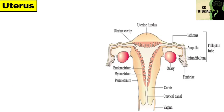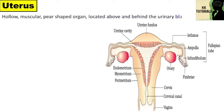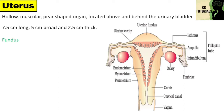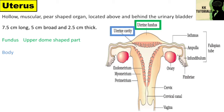Now let's talk about uterus. It is a hollow muscular pear-shaped organ located above and behind the urinary bladder. It is about 7.5 cm long, 5 cm broad and 2.5 cm thick. The uterus can be divided into three regions. The fundus is the upper dome-shaped part, where normally implantation of the embryo occurs. The body is the broad part of the uterus which gradually tapers downwards.